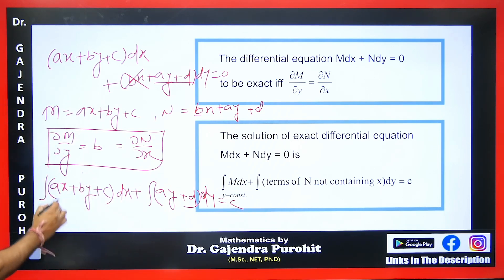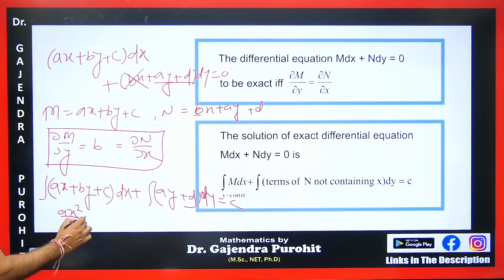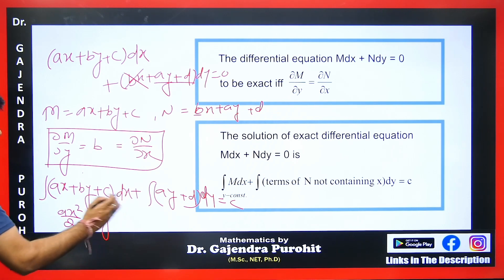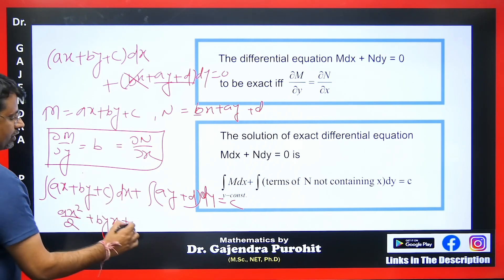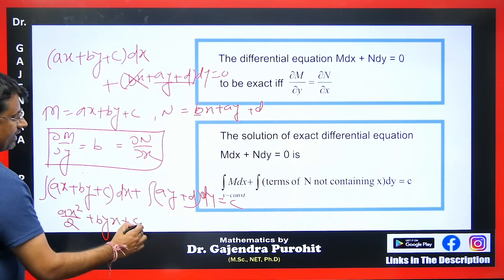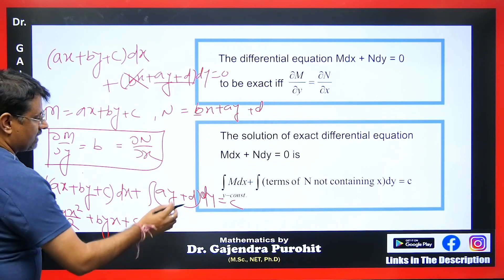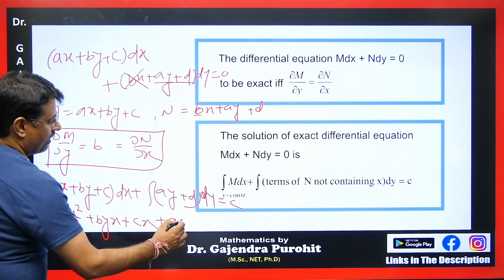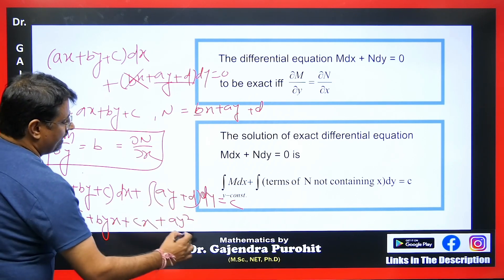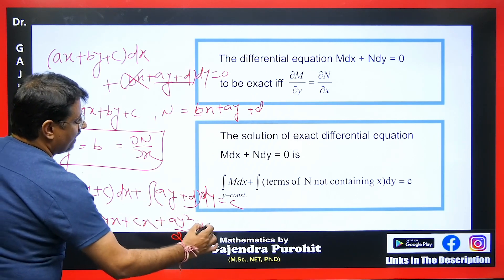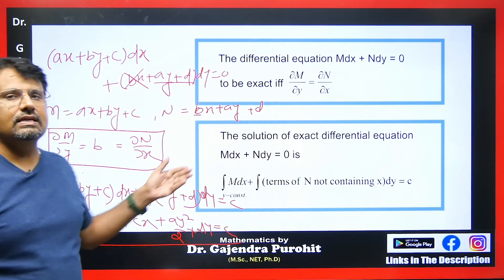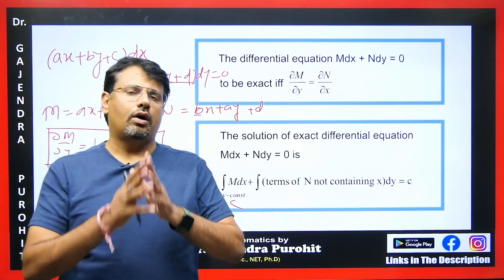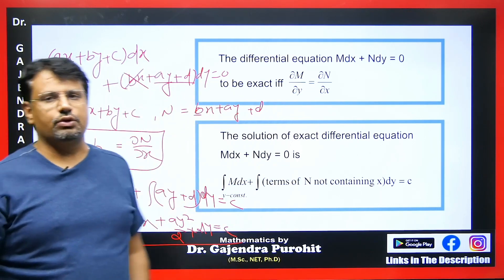The integration of x gives x²/2. We treat y as a constant, so by·dx integrates to bxy, and c·dx gives cx. Then integrating the remaining term with respect to y gives ay²/2 plus dy equals c. Therefore we get this as the answer.